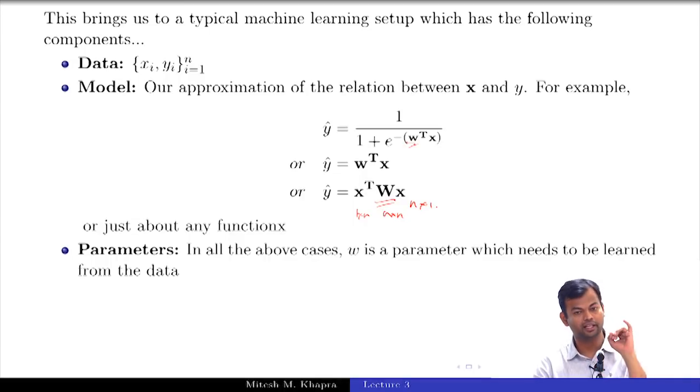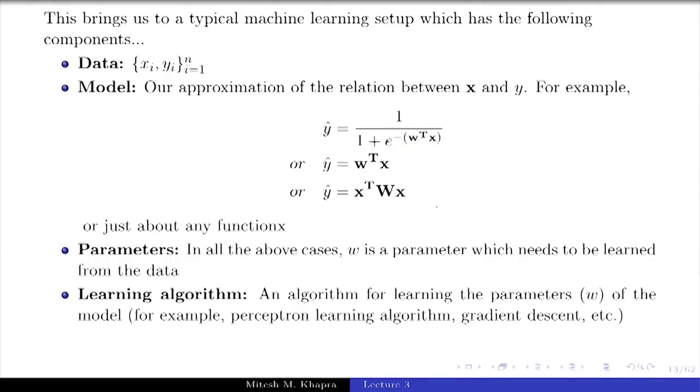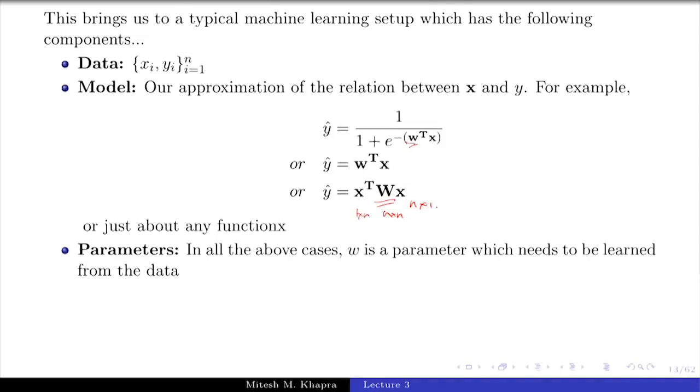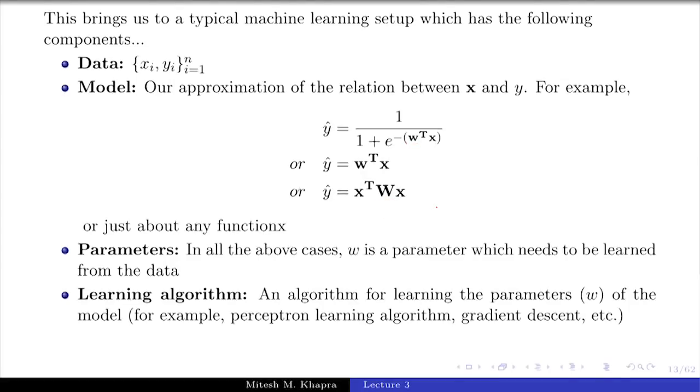For learning these parameters, we have something known as a learning algorithm. Did you see any learning algorithm so far? Perceptron learning algorithm. You already saw the perceptron learning algorithm, and it was able to learn the weights for a perceptron. There are various such algorithms. Today we are going to learn one such algorithm which is gradient descent. Now any kind of learning, what is it driven by? Learning is driven by errors. Objective function, right?